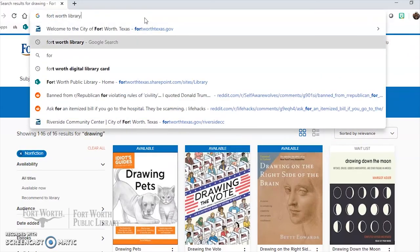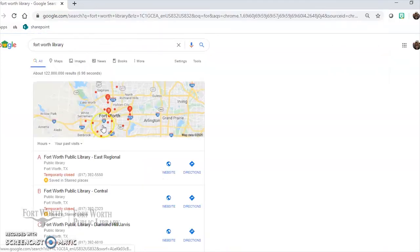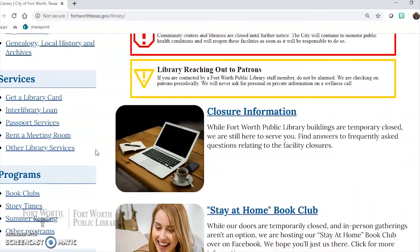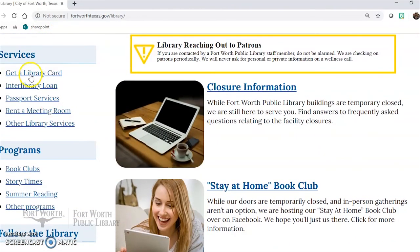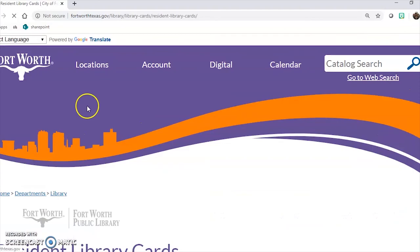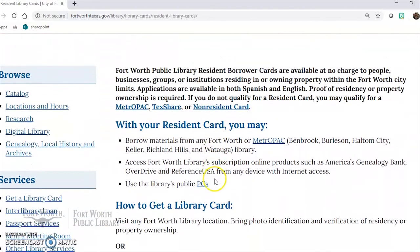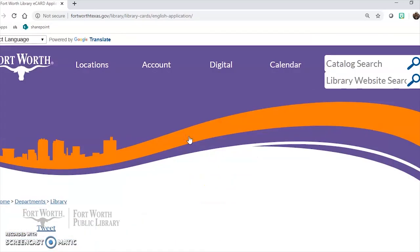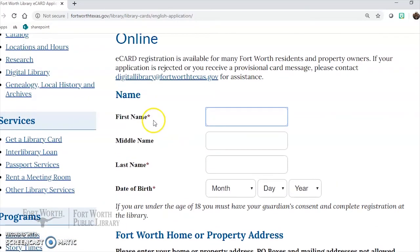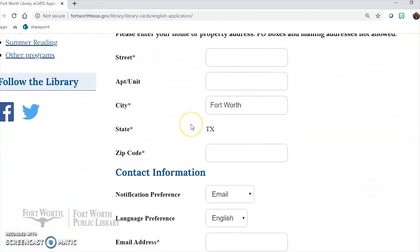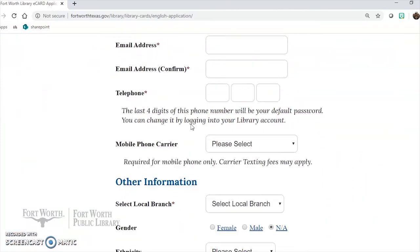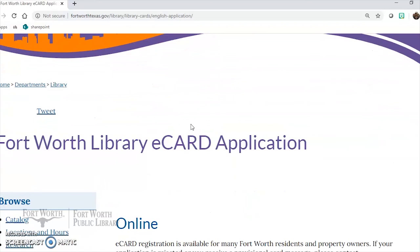But if you don't have a digital library card head on over to the Fort Worth library website. We can go over here and scroll down to right here which says get a library card. And from here you can get an e-card application all online, just fill out your information and then you can be on your way to digital resources that is all for free. Now you must be a Fort Worth resident.